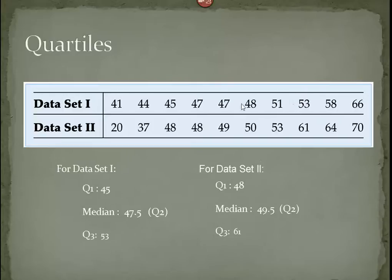The same locations of these medians exist for data set number two. Ten numbers, so the two in the middle are forty-nine and fifty, the fifth and the sixth numbers. So, we take the average of those two, we get forty-nine point five. For the first half, then, forty-eight is the Q1. And, for the second half, sixty-one is the Q3.